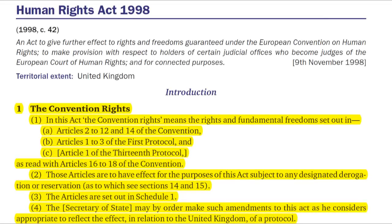Statutes often contain a definition section, usually located towards the back of the Act. These are like a special dictionary of terms used in the Act to help in understanding precisely what the Act says. In the Human Rights Act, because of the importance of the concept of convention rights throughout the Act, Section 1 is the provision which defines the meaning of convention rights, as we see here. The Act also contains a more technical definition section, Section 21, which sets out definitions of other, less prominent terms used in the Act.